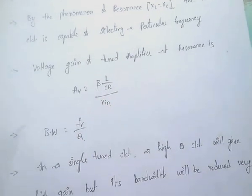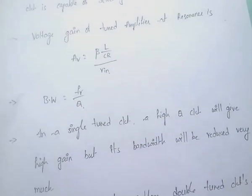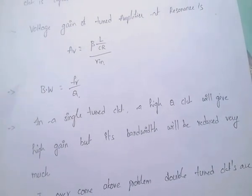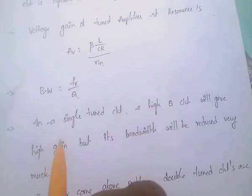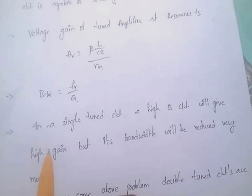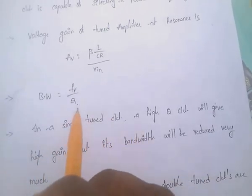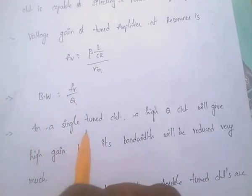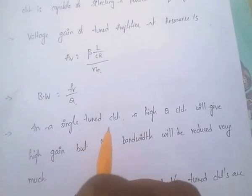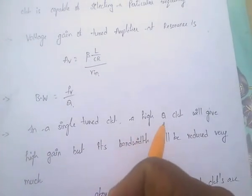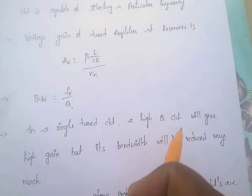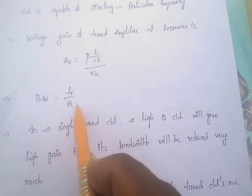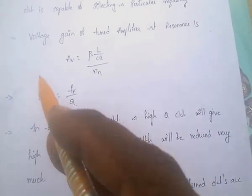And bandwidth equals FR by Q, where FR is the resonant frequency and Q is the quality factor. In a single tuned circuit, a high Q circuit will give high gain.